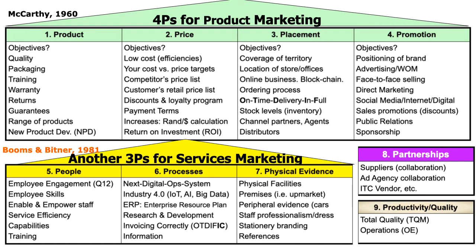The most important P, if you are marketing a product, would be product. The second most important P, in general, would be the price tag on the product. Once you've got a product with a price, you can start to distribute it — which is the third P, called placement. Placement means channel to markets or your distribution strategy. A very big one there is on-time delivery in full. Another big thing under placement is stock levels, or what we call inventory. Now we've got a product with a price tag, it's ready to be sold, and we need to promote it.